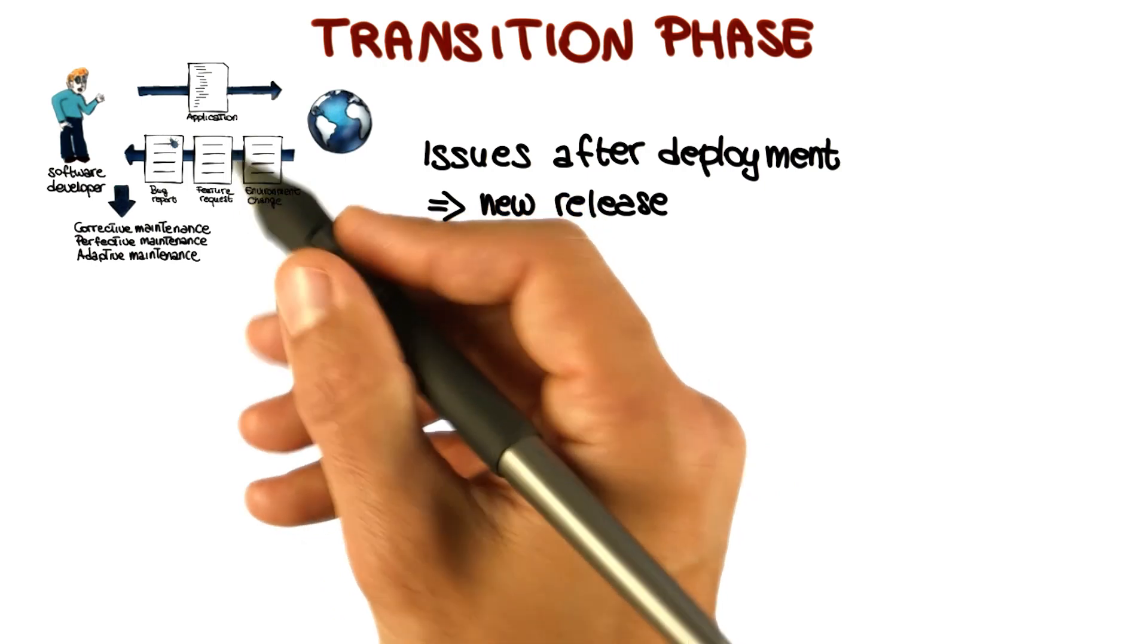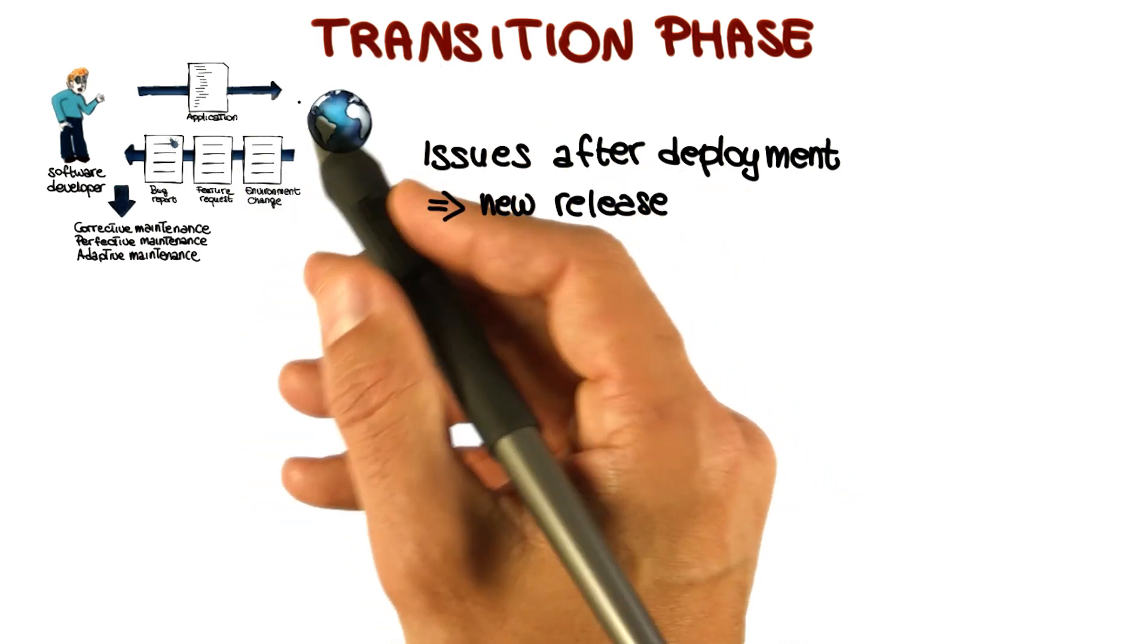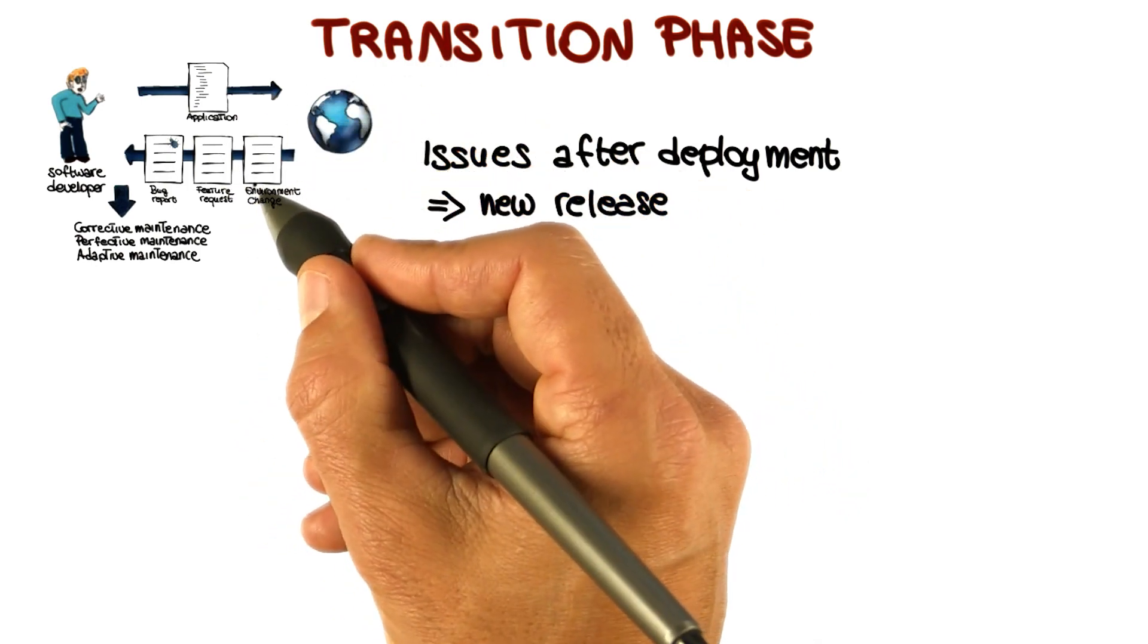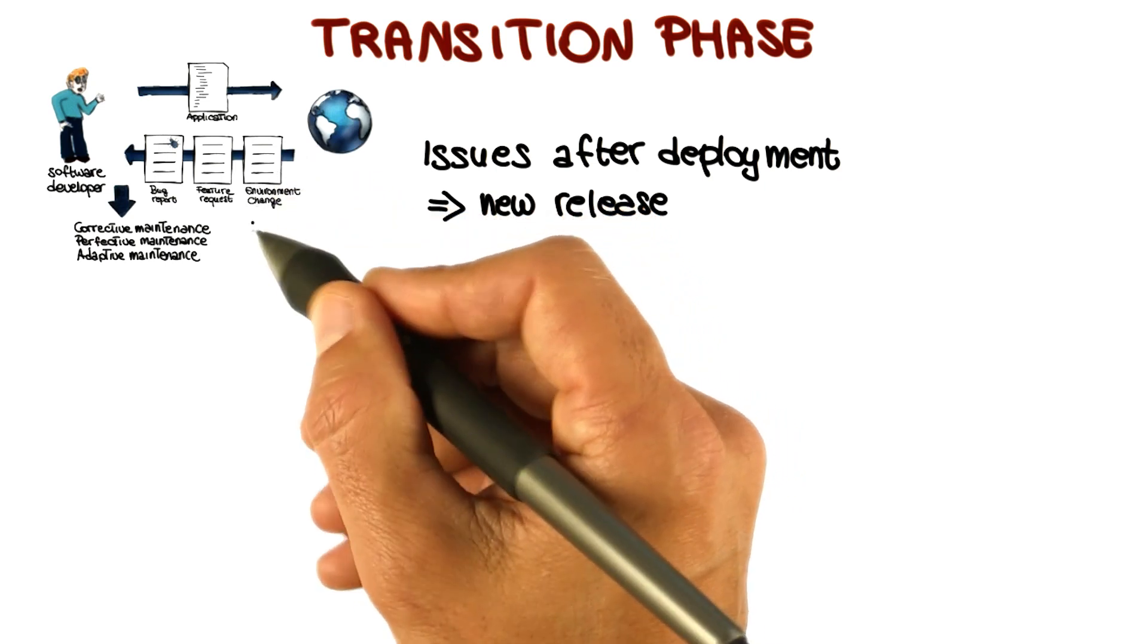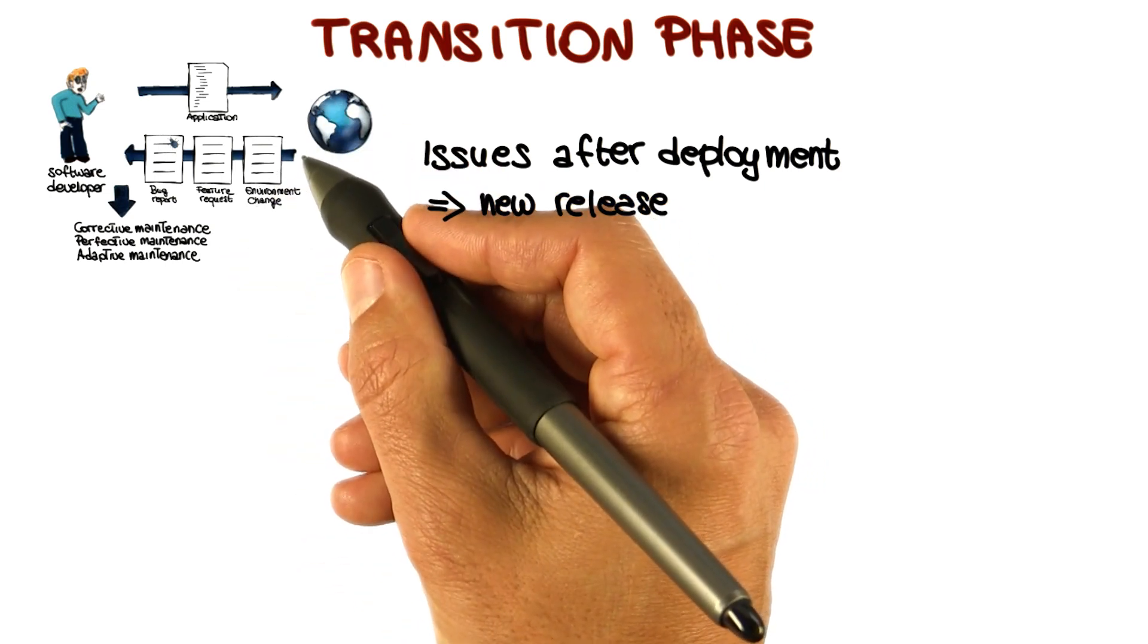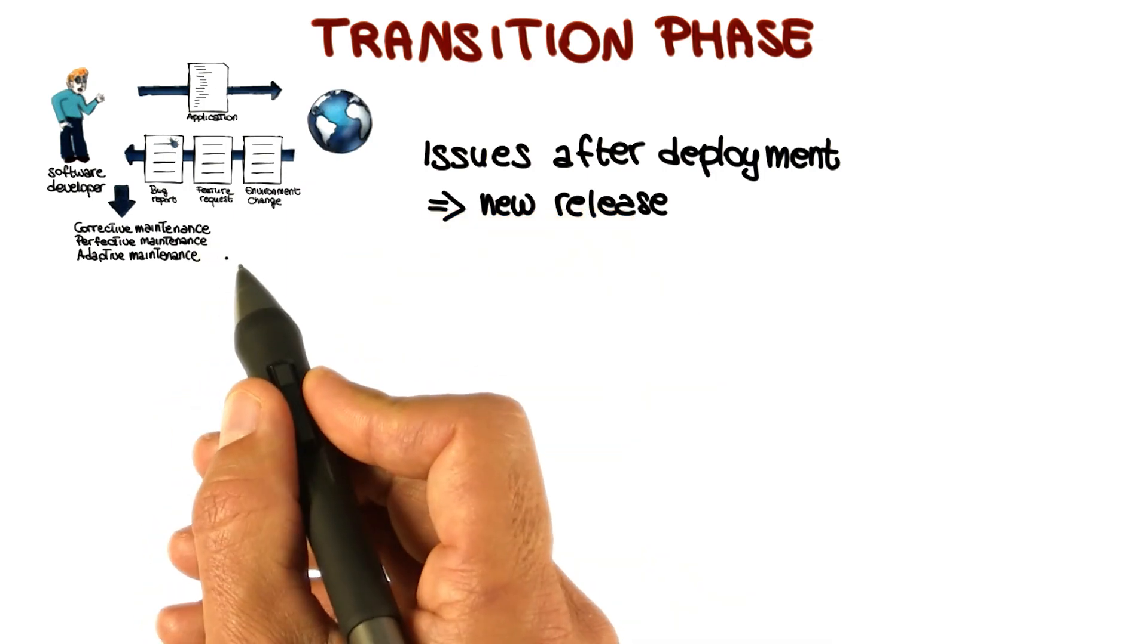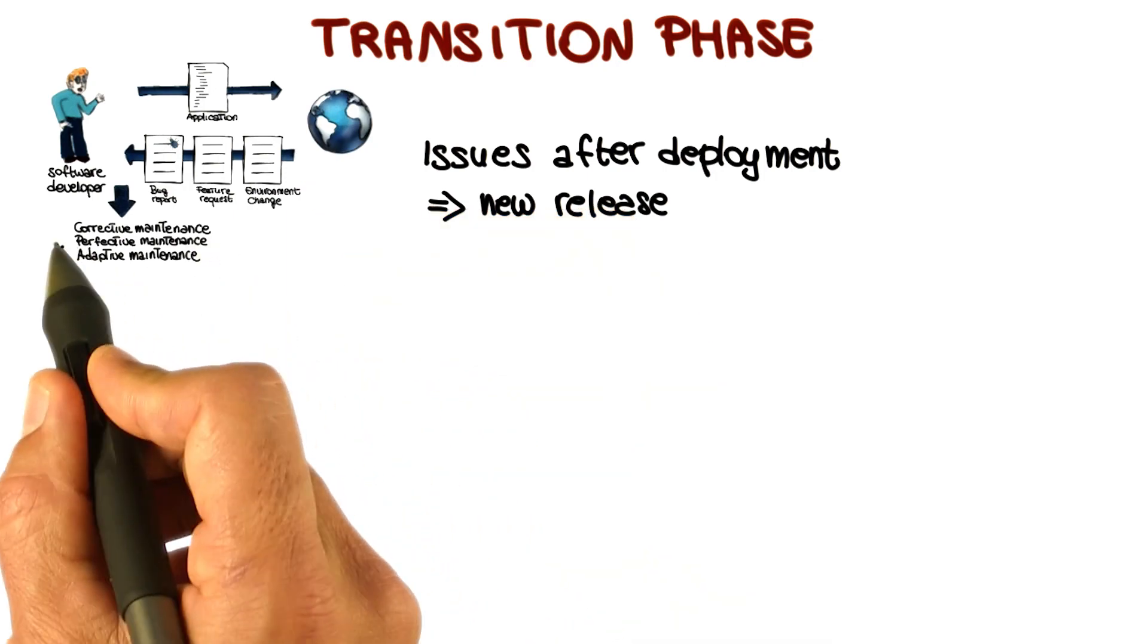And in addition, there might be issues that don't come necessarily from users, but that are related to the fact that our system has to operate, has to work in a new execution environment. For example, the new version of an operating system or the new version of a set of libraries. When this happens, we have to address these issues by performing maintenance.